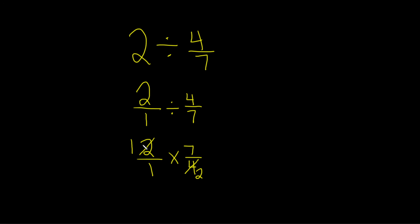And now you can multiply it straight across. 1 times 7 is equal to 7. 1 times 2 is equal to 2. And that should be the final answer.